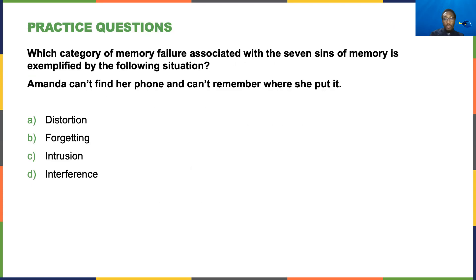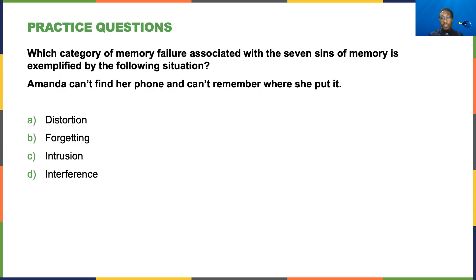Which category of memory failure associated with the seven sins of memory is exemplified in the following situation? Amanda can't find her phone and can't remember where she put it. This is a simple example of forgetting.